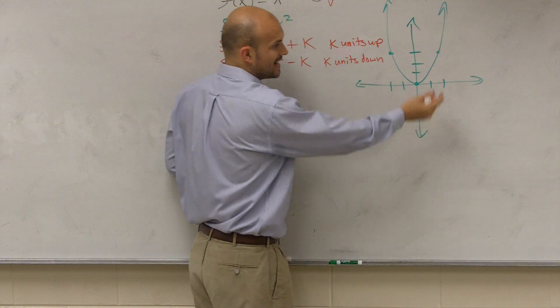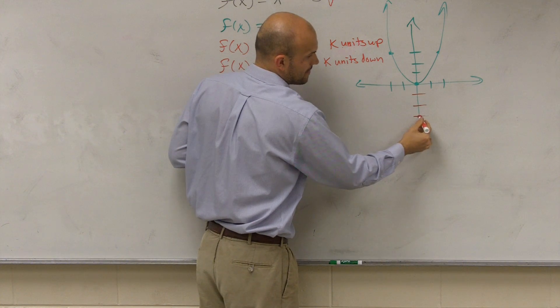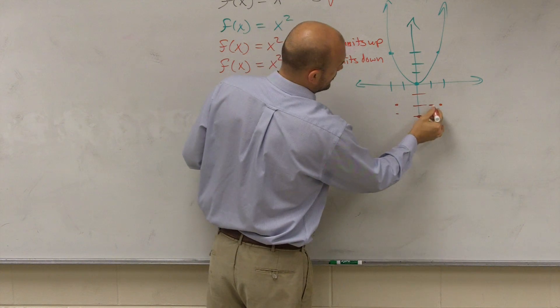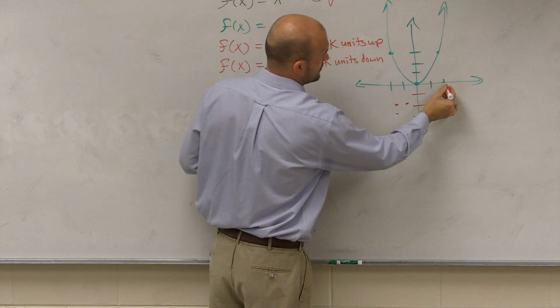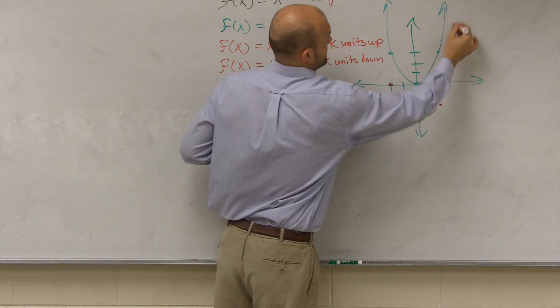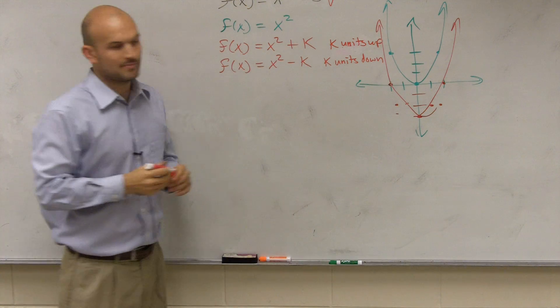So all I'm going to do, guys, is you take this graph, and you go down 3. Then you go up 1 over 1, up 1 over 1, and then, I'm sorry, up 1 over 1, up 1 over 1, and up 2, over 4, over 2, up 4. And there's the graph. It's not beautiful, but it's there.